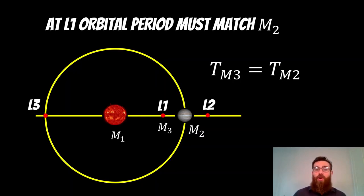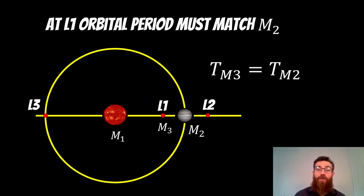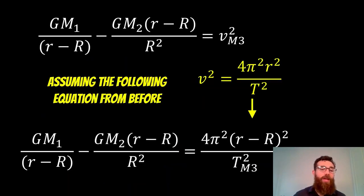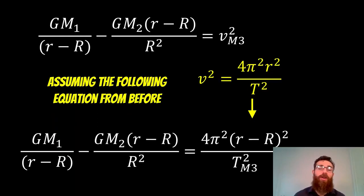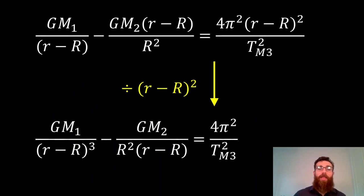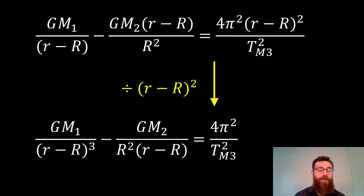At the L1 Lagrange point, the orbital period must match M2 because they stay in place. So the orbital period of M3 equals the orbital period of M2. Using the velocity squared equation — which has the orbital period and the separation distance on the right-hand side — we write it for M3 using its period and distance R minus r. Dividing through by (R minus r)² leaves just 4π²/T² on the right-hand side.